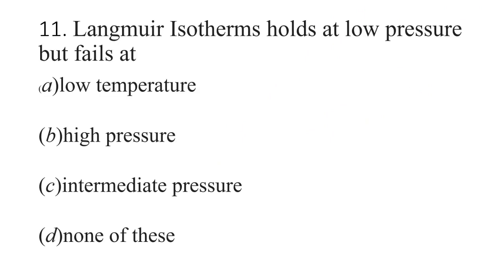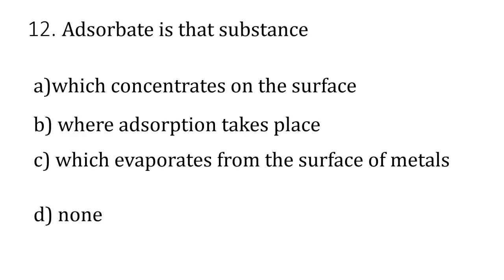In the eleventh question: Langmuir isotherm holds at low pressure but fails at — low temperature, high pressure, intermediate pressure, or none of these? That will also fail at B — high pressure.